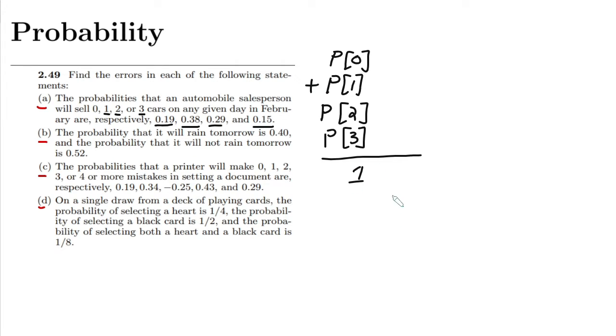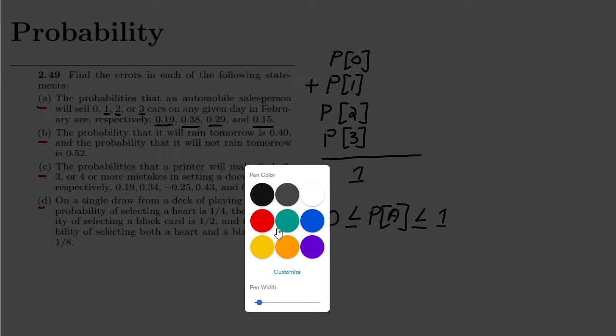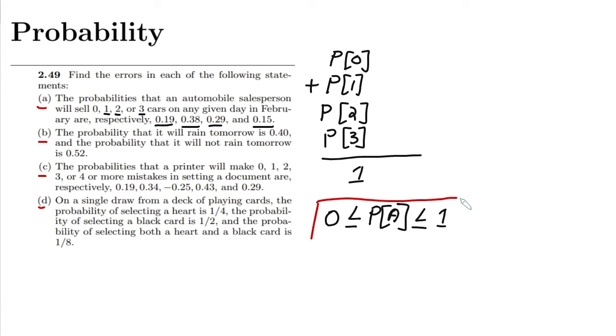The probability of any event A is always greater than or equal to zero and less than or equal to one, because that is basically the range in which the probabilities should lie.